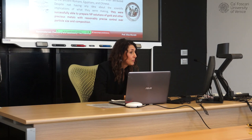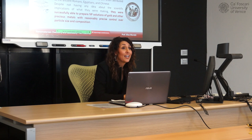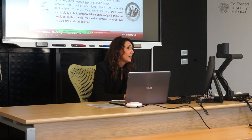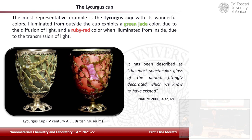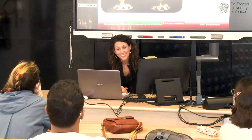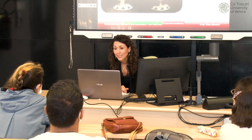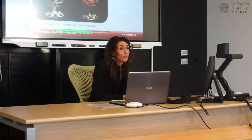The earliest engineered nanoparticles are often attributed to the ancient Romans, Egyptians and Chinese. Despite not having any idea about the scientific implications of what they were making, they were successfully able to prepare nanoparticle colloidal solutions, mainly of gold and other precious metals, with precise control over size, composition and shape. The most representative example is the Lycurgus Cup — preserved at the British Museum — which was perhaps made in Rome or Alexandria three or four centuries before Christ. The most remarkable aspect of the cup is, of course, its color.